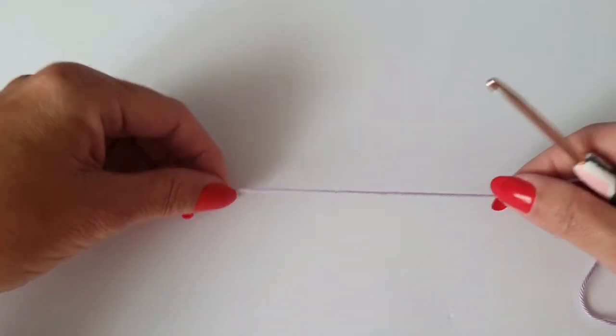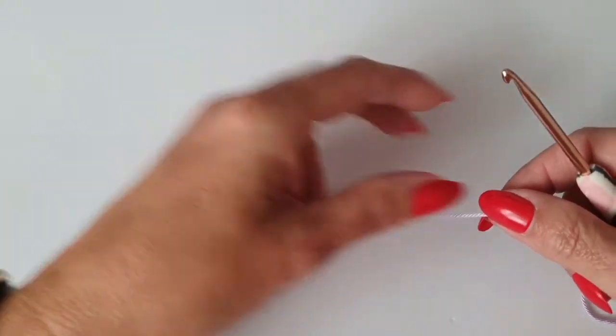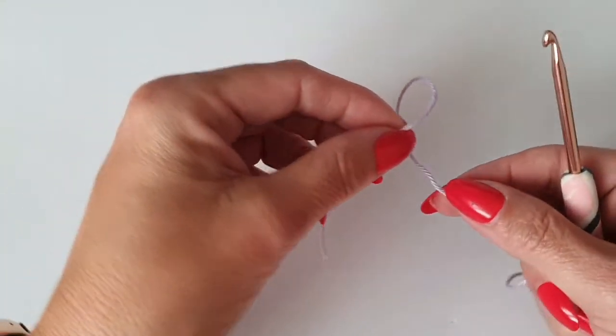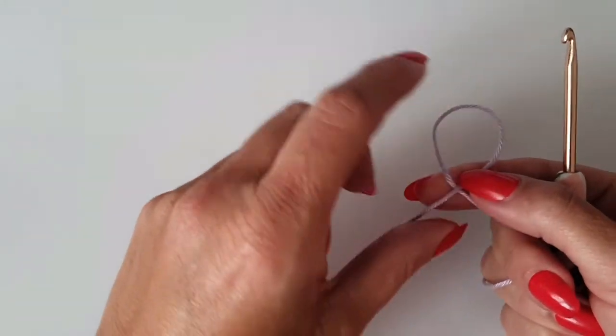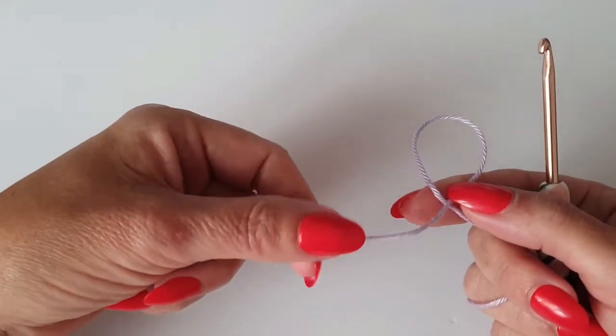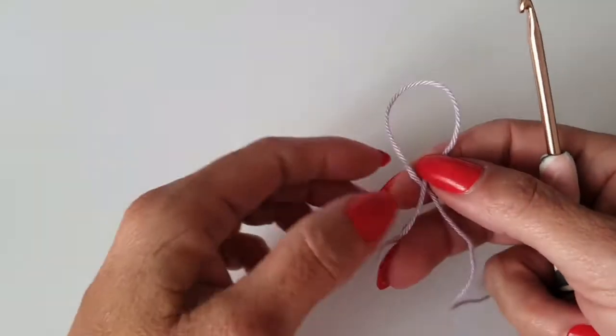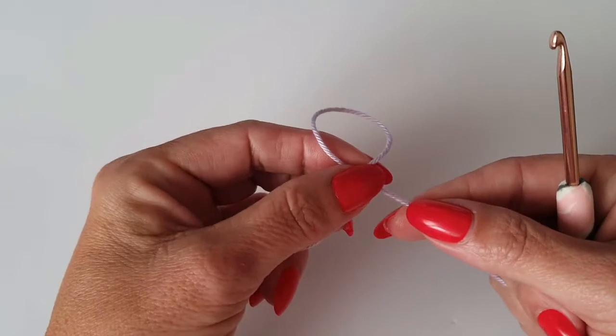Okay, for chain stitch we need to start by making a slip knot. How I do that is I fold the end of the yarn over so the end is going in front of the main part of the yarn.